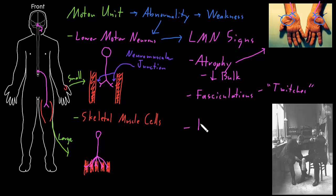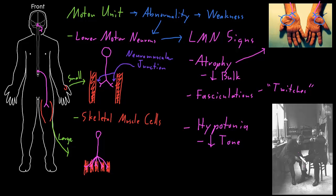The next lower motor neuron sign is called hypotonia, which means a decrease in the tone of skeletal muscle. Muscle tone refers to how much the muscle is contracted when a person is trying to relax it, because our muscles are always just a little bit contracted even when we're not trying to contract them. For example, if a doctor tells a patient to relax their leg like a wet noodle and then starts moving it — bending and unbending the knee — the doctor will feel a little bit of resistance, a little tone, even when the person is trying to relax. But if there's a problem with the lower motor neurons so that they aren't telling the skeletal muscle cells to contract as much, there won't be as much tone — there will be hypotonia, and the doctor will feel that the leg is floppy.